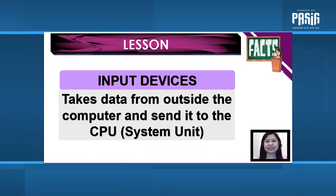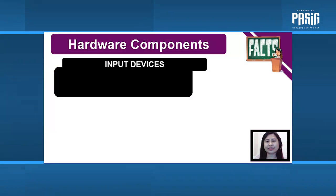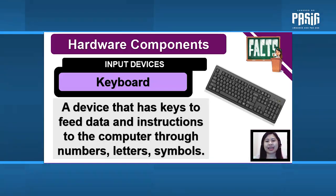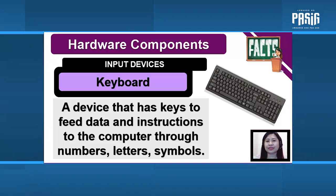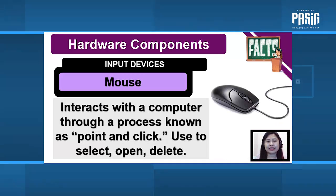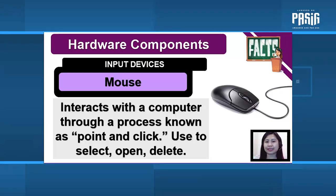Input devices take data from outside the computer and send it to the CPU inside the system unit. Let us now study some input devices. To begin with, the keyboard: a device that has keys to feed data and instructions to the computer through numbers, letters, symbols, or functions. Next, the mouse: interacts with a computer through a process known as point and click, used to select, open, and delete files.